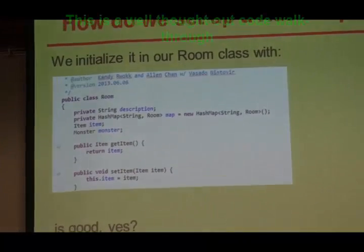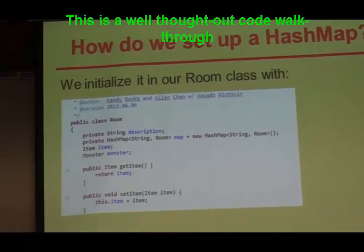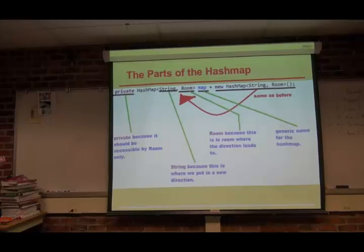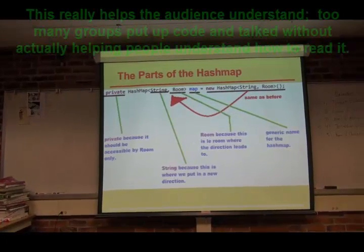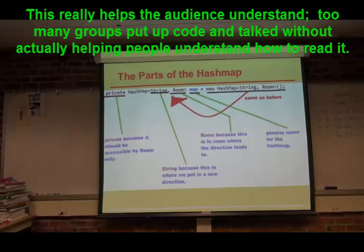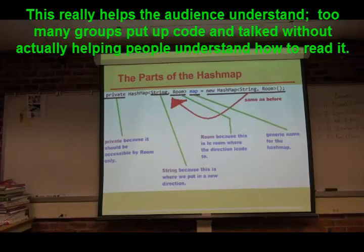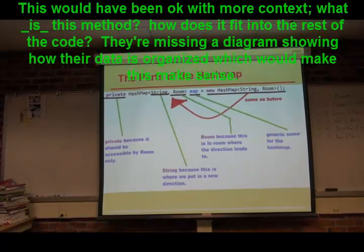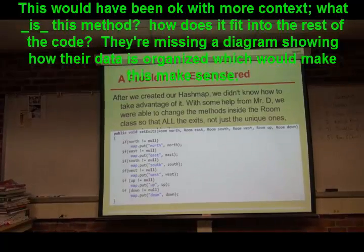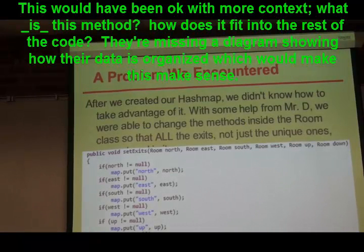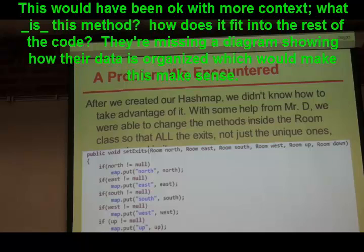HashMaps are sort of like ArrayLists except they also store descriptions. By using a HashMap, it's easy to store specific directions for specific rooms, such as 'upstairs' or 'ladder' for a ladder room. We initialize it in our room class. It's private so it's only accessible by the room class — it takes in a string like a direction, and then returns a room where that direction leads to. After we made our HashMap, we had to redesign and refactor the entire code so other parts could take advantage of it.